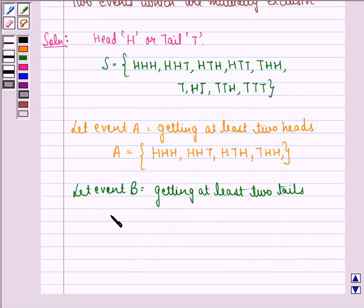Let event B be getting at least 2 tails. The sample space for event B will be all the elements where we have 2 or 3 tails. So we will have these 3 elements: THT, TTH, and TTT.